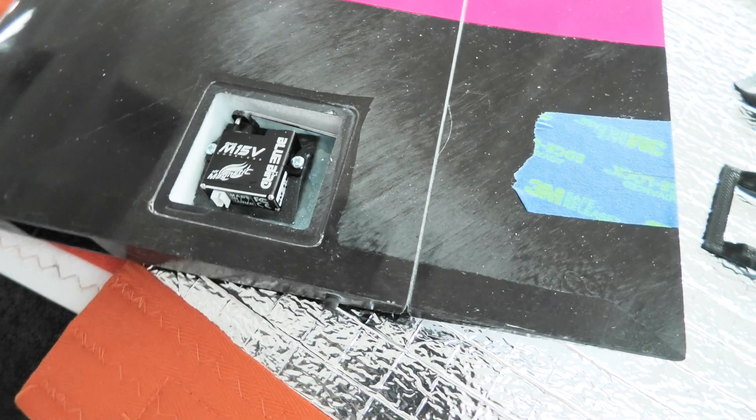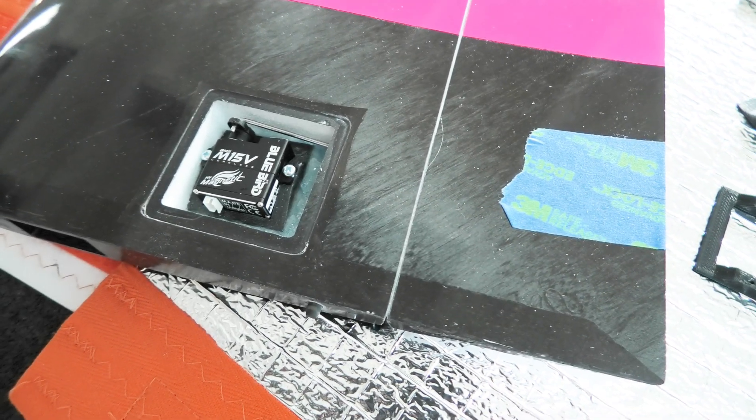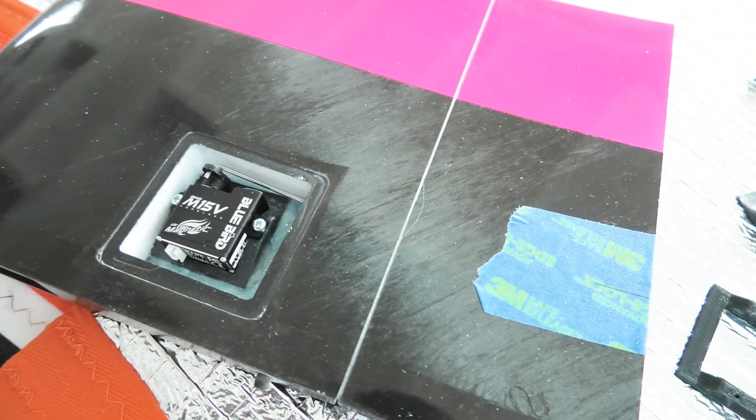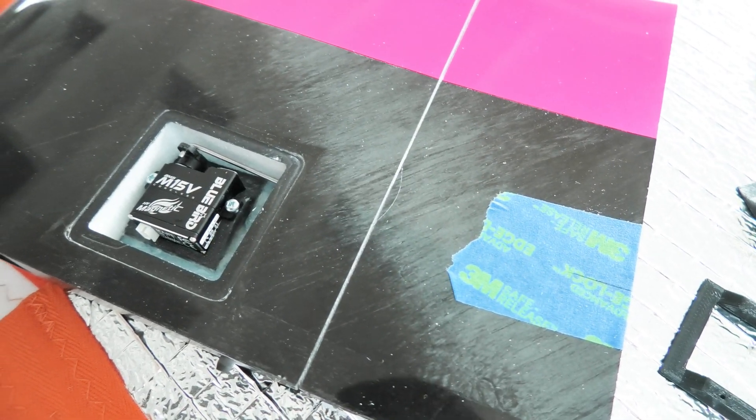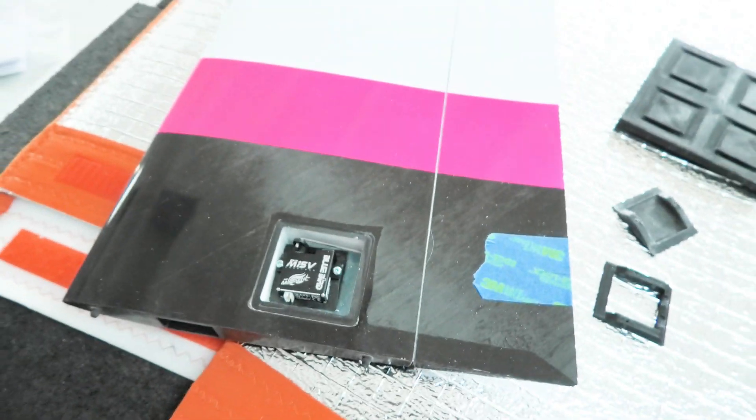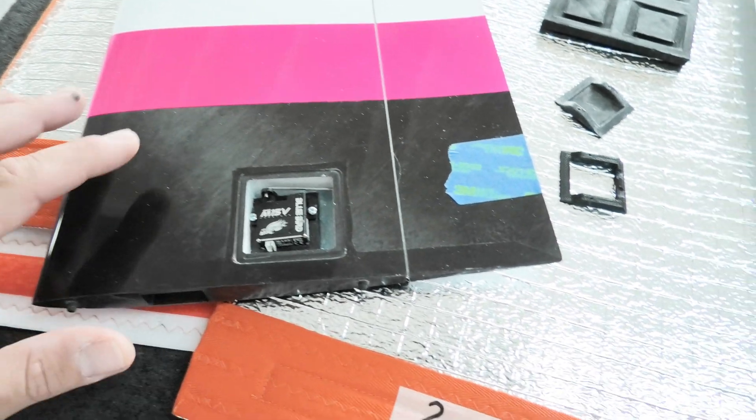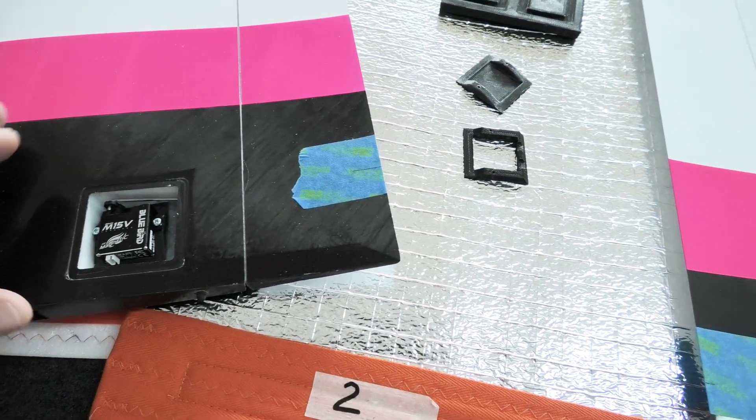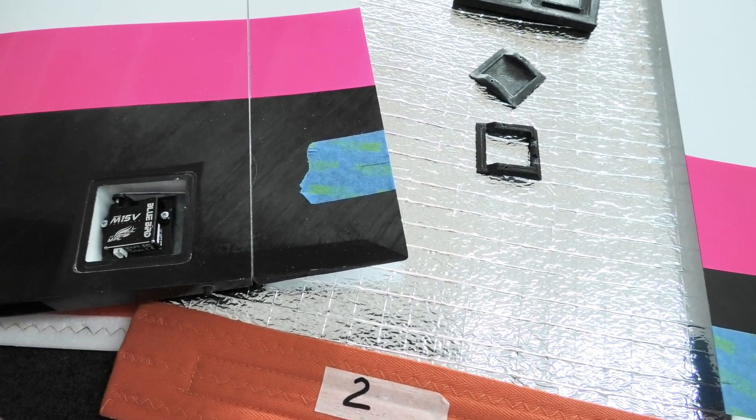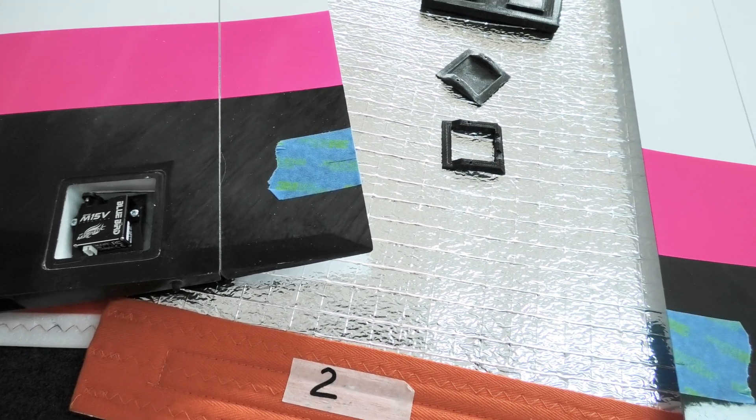Well, there's the finished product. I have a servo mounted in my new carbon fiber, solid carbon fiber servo tray and a F5J wingtip. And it came out about as good as I had hoped. So I'm really happy with it.